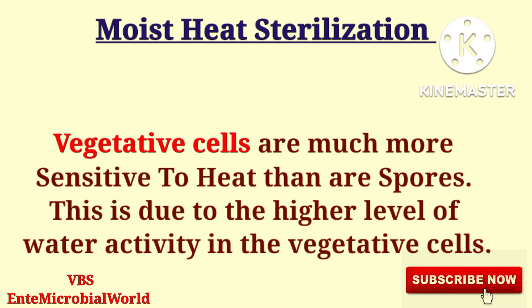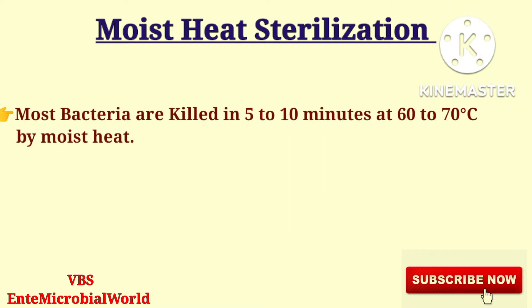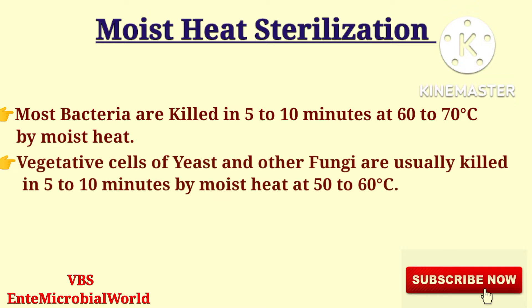Vegetative cells are much more sensitive to heat than spores, due to the higher level of water activity in the vegetative cells. Most bacteria are killed in 5 to 10 minutes at 60 to 70 degrees Celsius by moist heat. Vegetative cells of yeast and other fungi are usually killed in 5 to 10 minutes by moist heat.